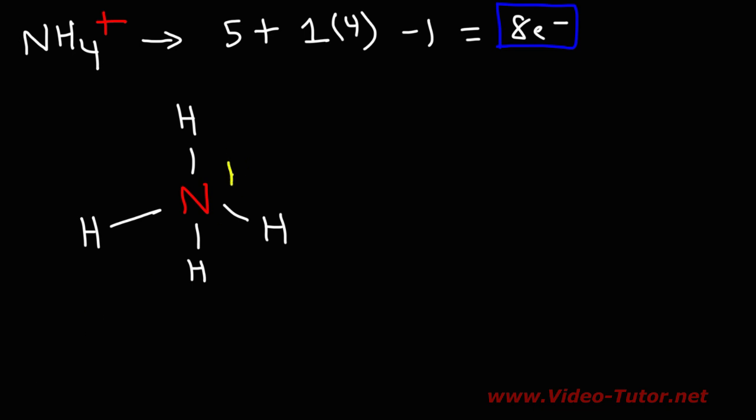The nitrogen has a positive formal charge. And you could calculate the formal charge of an element using this formula. It's equal to the number of valence electrons in the free element minus the bonds and dots that you see in the structure.